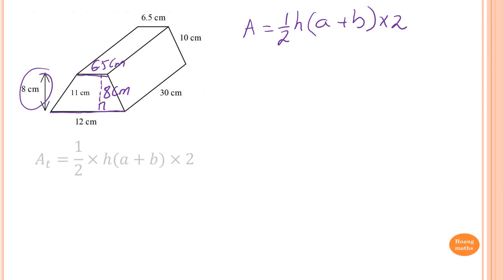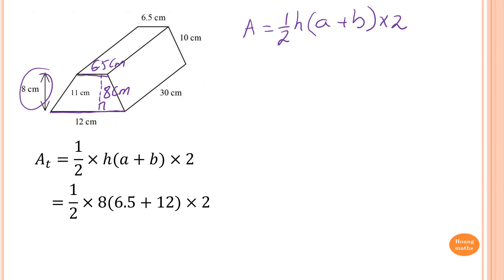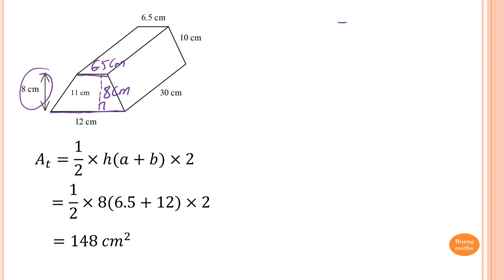So I write out the rule: area of both trapeziums is a half of H times (A plus B), times 2, which gives me the front and the back. Substituting the values: a half of 8 times (6.5 plus 12), times 2, which gives me 148 cm².